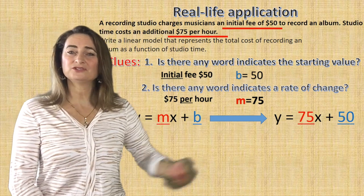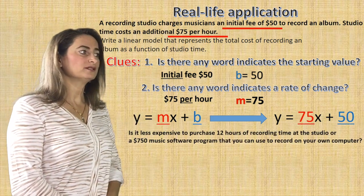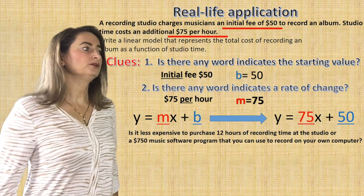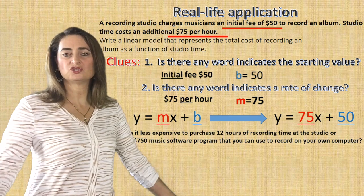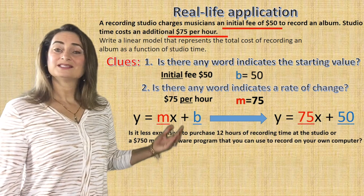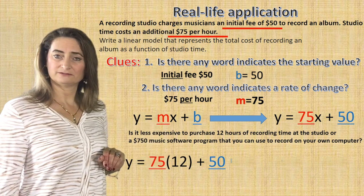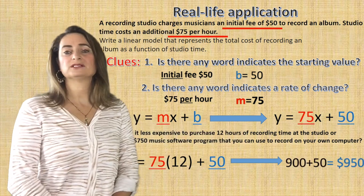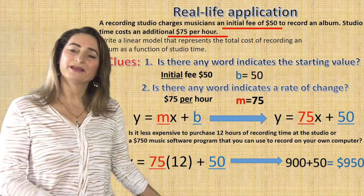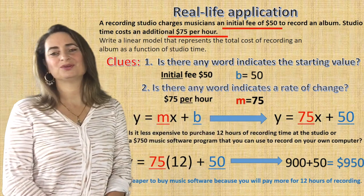Now let's use that equation to answer a question: is it less expensive to purchase 12 hours of recording time at the studio or a $750 music software program to record on your own computer? Substitute 12 for x — that gives you 900 plus 50, so the cost for 12 hours is $950. The software would be cheaper because it only costs $750, whereas going to the studio for 12 hours costs $950.